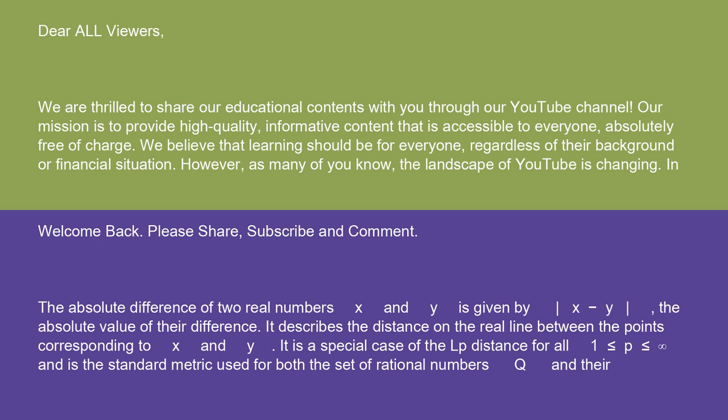The absolute difference of two real numbers x and y is given by |x - y|, the absolute value of their difference. It describes the distance on the real line between the points corresponding to x and y.